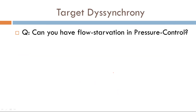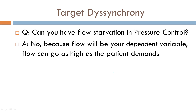Another question: can you have flow starvation in pressure control? The answer is no, because flow will be your dependent variable — it can go as high as the patient demands. So that's it for target dyssynchrony. Join me in my next video where I address cycle dyssynchrony. Thanks a lot.